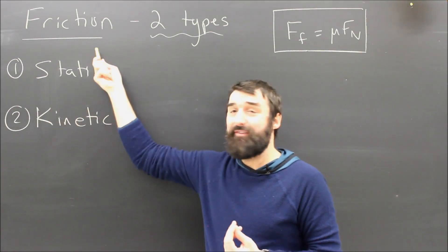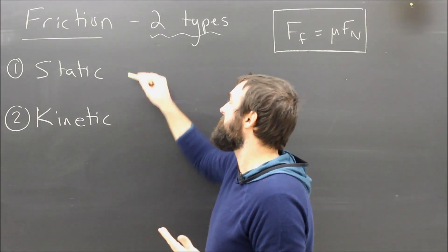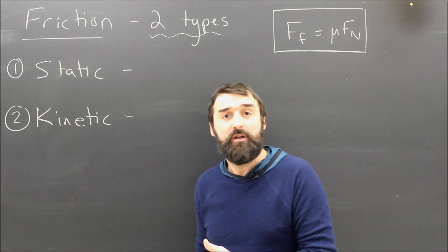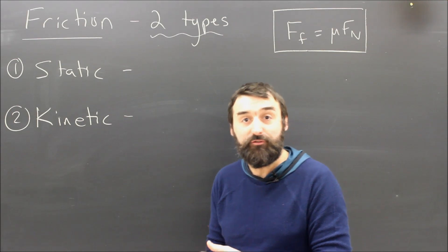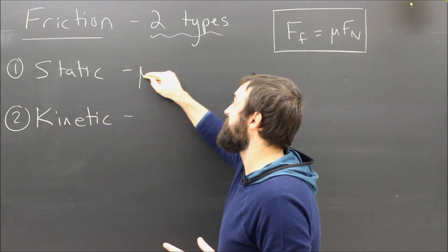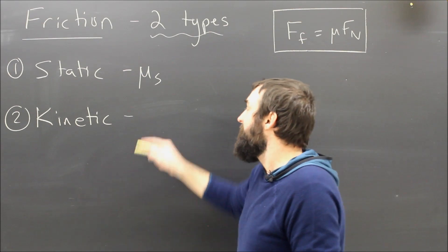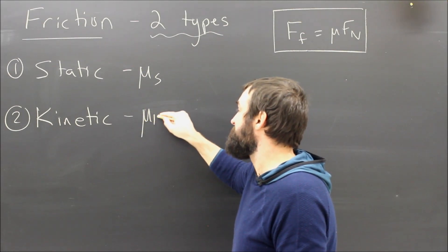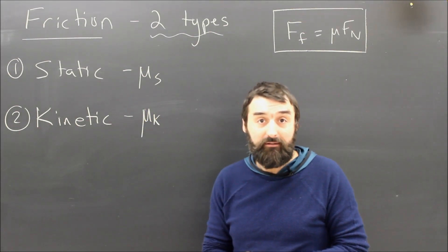Sometimes you'll see them called Fs and Fk, but usually we just talk about the two different coefficients. When there's no motion between the two surfaces, the mu, the coefficient of friction, is called mu s for static. And when they are sliding or skidding, it is called mu k for kinetic.